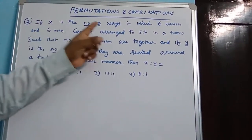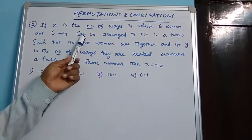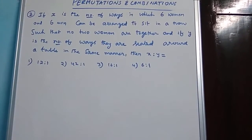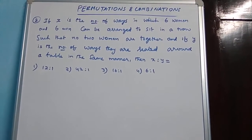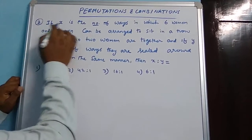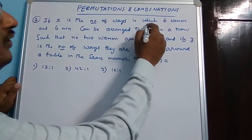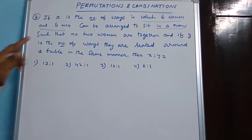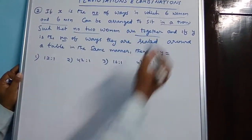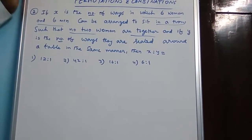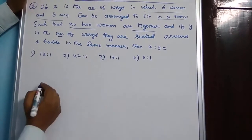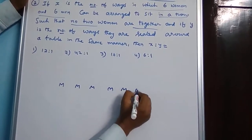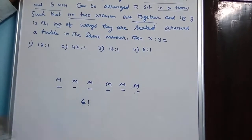Number 2. If X is the number of ways in which 6 women and 6 men can be arranged to sit in a row such that no 2 women are together, and if Y is the number of ways they are seated around a table in the same manner, then what is X to Y? What is X? The number of ways of arranging 6 women and 6 men in a row — this is linear permutation — such that no 2 women are together.